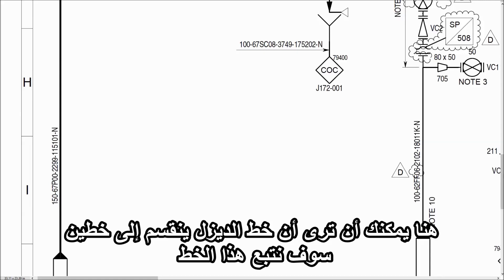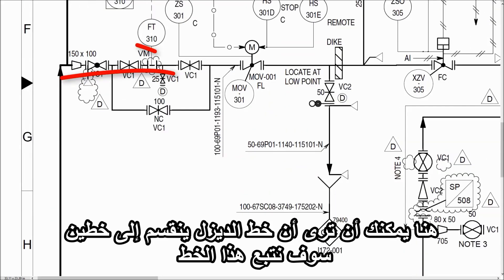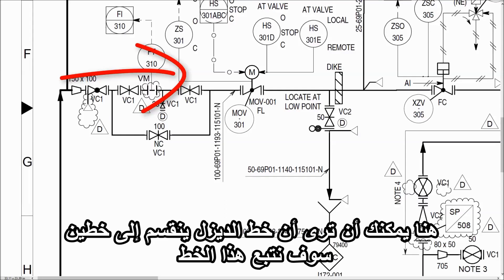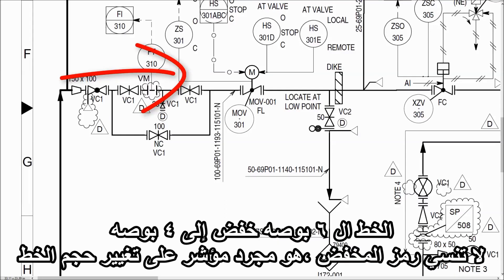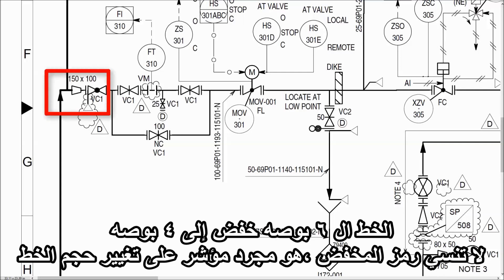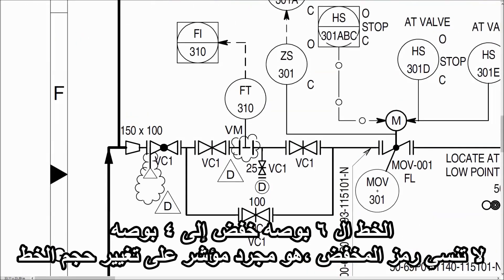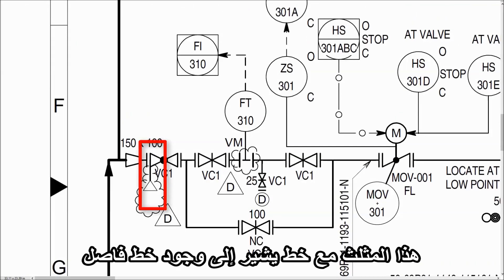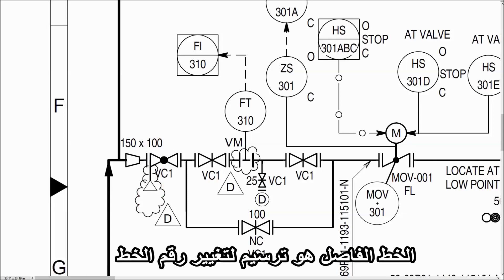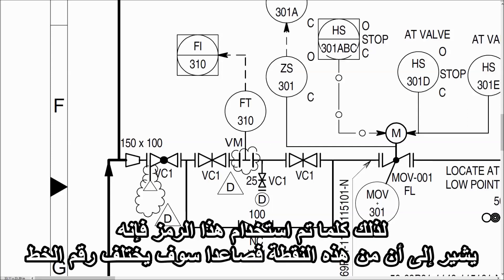Here you can see that the diesel line is divided into two streams. We follow this stream. The 6 inch line is getting reduced to 4 inch. Don't get confused with the reducer symbol — it is just an indication of the line size change. Now, this triangle with the line indicates a line break, which is the demarcation of a line number change. So whenever this symbol is used, it indicates that from that point onward the line number is different.